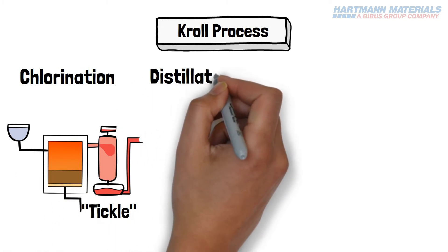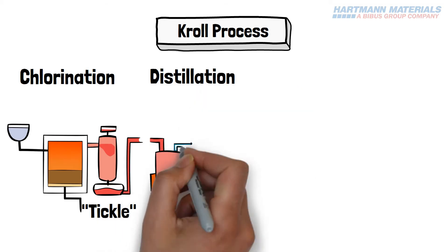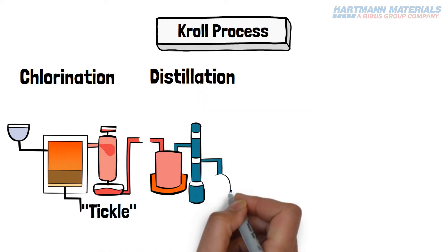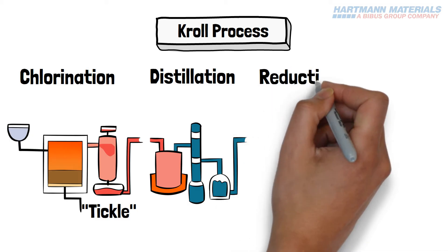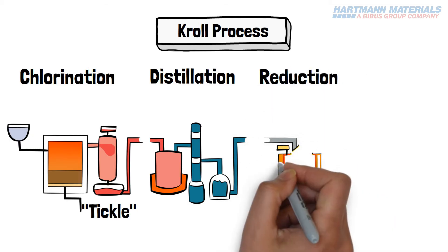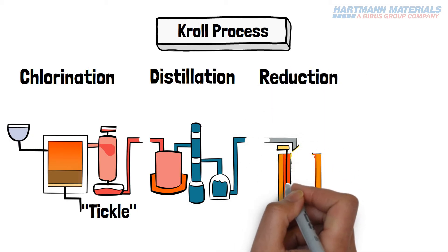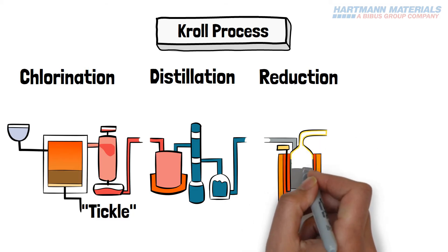The titanium chloride is purified by fractional distillation to remove impurities. The purified titanium chloride is then reduced in a reactor containing magnesium, heated to 800 to 850 degrees.